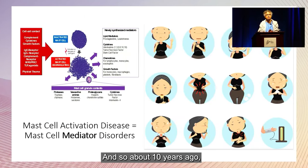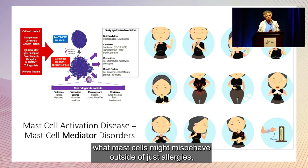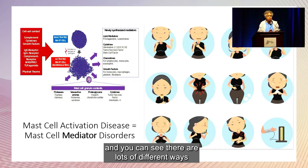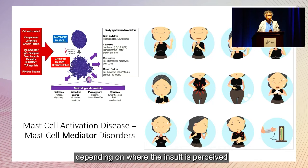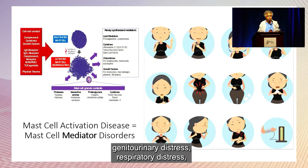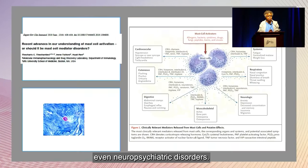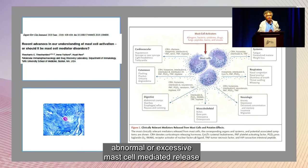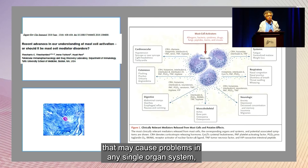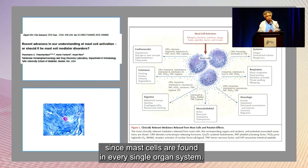About 10 years ago, they decided to describe what mast cells might do when they misbehave outside of just allergies. Depending on where the insult is perceived, you may have gastrointestinal distress, genitourinary distress, respiratory distress, or even neuropsychiatric disorders. It really is a question of abnormal or excessive mast cell-mediated release that may cause problems in any single organ system, since mast cells are found in every single organ system.